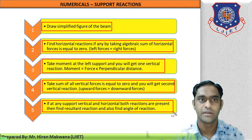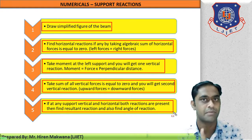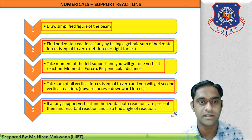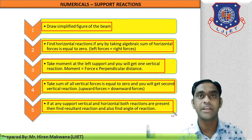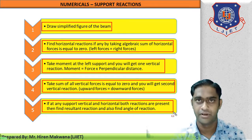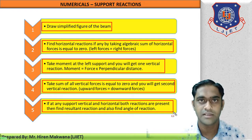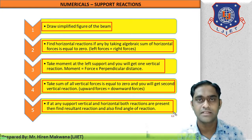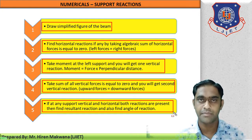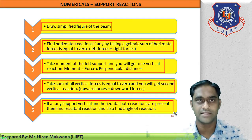Important note: step number two will be cancelled when horizontal reactions are not present. If step number two is cancelled, then step number five is also cancelled, because step five applies only when both vertical and horizontal reactions are present. So the remaining steps are one, three, and four only. In today's numericals, steps two and five will be cancelled out.